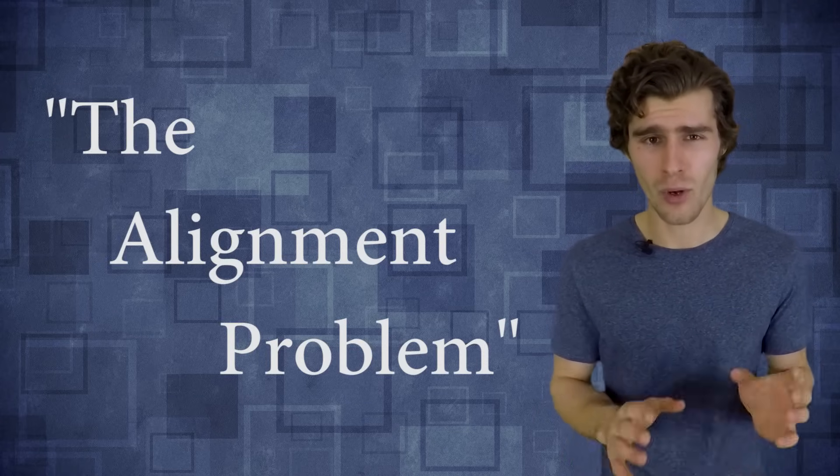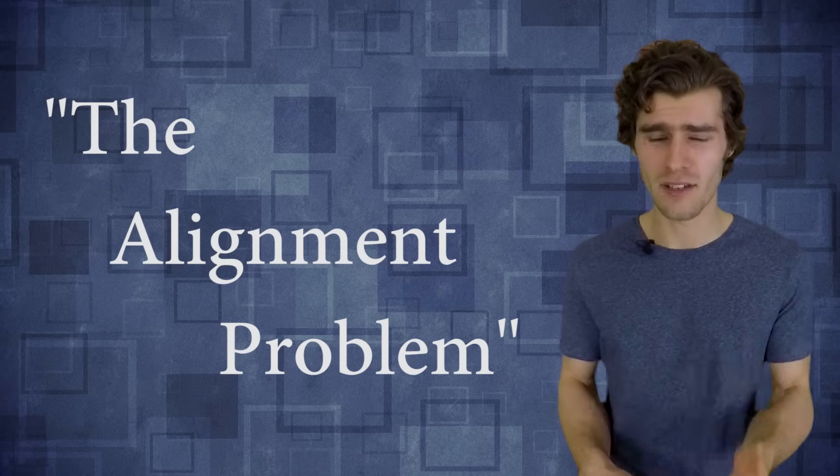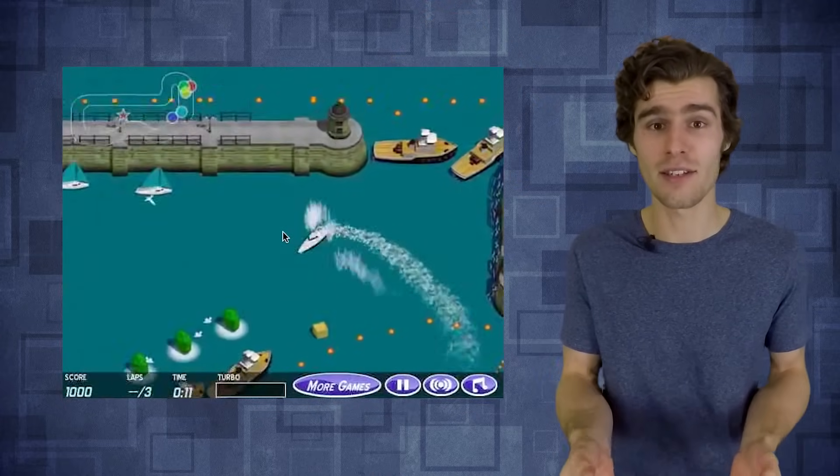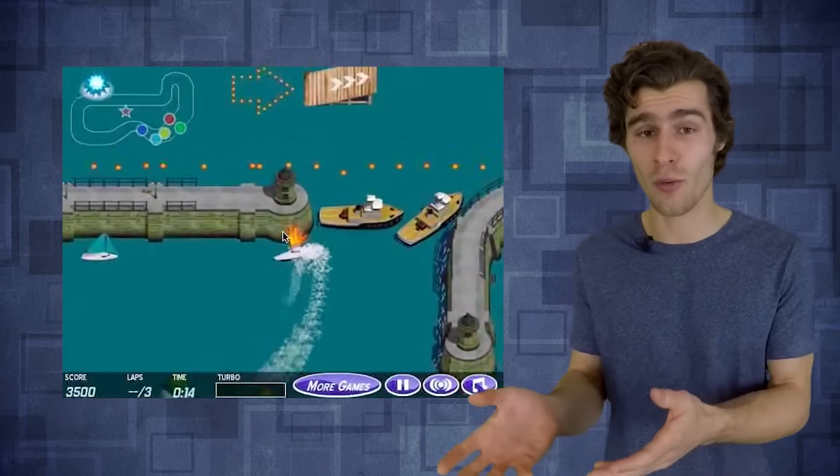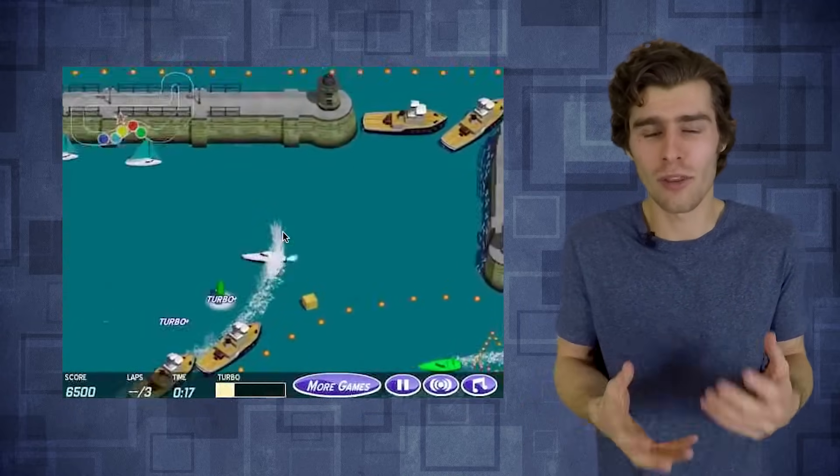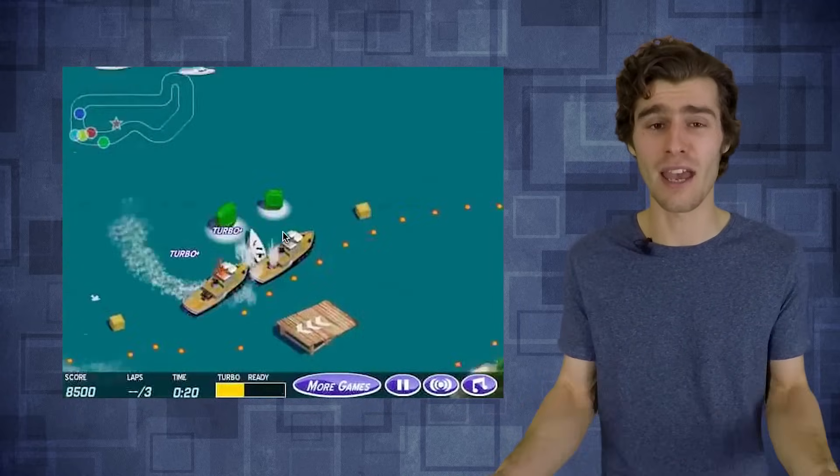The second problem is that reward shaping suffers from what we call the alignment problem. So it turns out that reward shaping is actually surprisingly difficult. In a lot of cases, when you shape your reward function, your agent will find some very surprising way to make sure that it's getting a lot of reward, but not doing at all what you wanted it to do. And in a sense, the policy is just overfitting to that specific reward function that you designed, while not generalizing to the intended behavior that you had in mind.